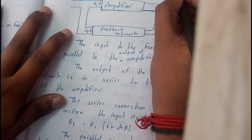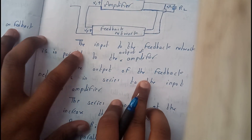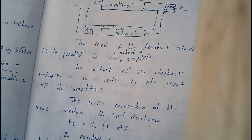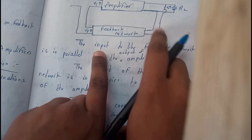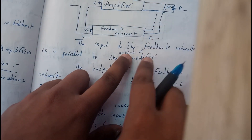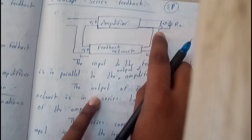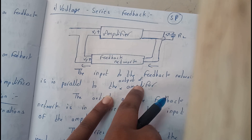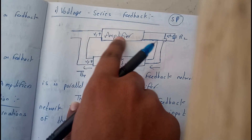Voltage series: the code is series-parallel. The first statement — the input of the feedback network is in parallel to the output of the amplifier. The second statement — the output of the feedback network is in series with the input of the amplifier.